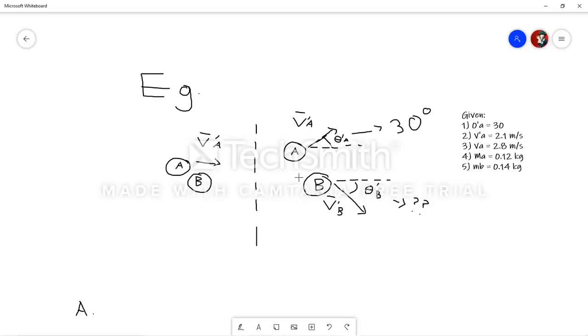As you can see here, we have VA or ball A going towards ball B, and it collides with it, and ball A goes up and ball B goes down. Now, it is given that ball A has an angle of 30 degrees, as given right here. And then, we know that ball A has a mass of 0.12 kg, ball B has a mass of 0.14 kg, ball A has an initial speed of 2.8 meters per second, and has a final speed of 2.1 meters per second.